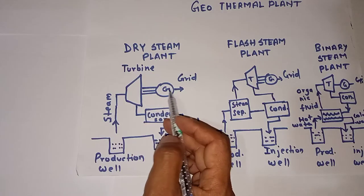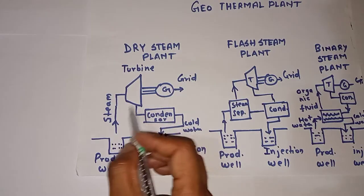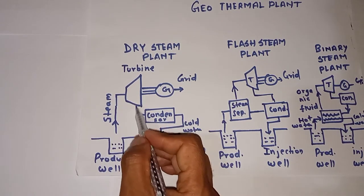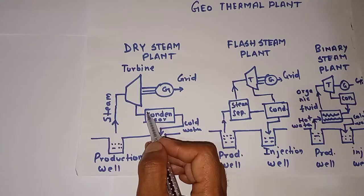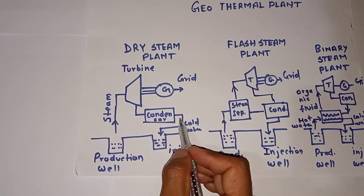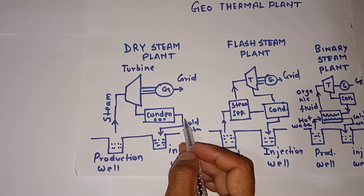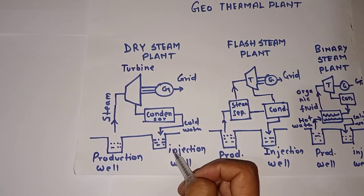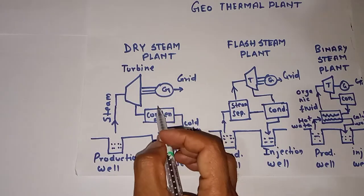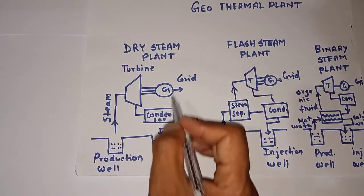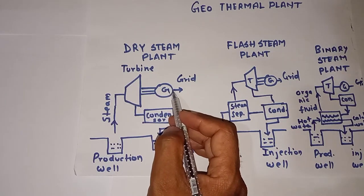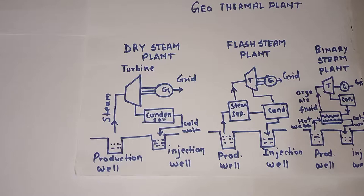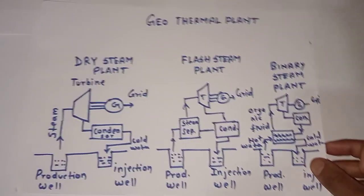The mechanical energy is then converted to electrical energy. The remaining water particles go to the condenser, which converts water vapor into cold liquid water, and that cold water is sent back to the injection well. This is the process of the dry steam plant. The electricity generated is given to the transmission lines or grids.